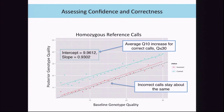Looking at individual variants: baseline genotype quality from haplotype caller is on the x-axis and the posterior refined genotype quality is on the y-axis. Genotypes correct after refinement are in green; incorrect ones in red. Fitting a linear regression to the correct genotypes shows a straight line with an intercept of about 10—equivalent to a GQ10 boost for correct genotypes, which is great. Even better, the incorrect genotypes don't get boosted; they just stay where they are.